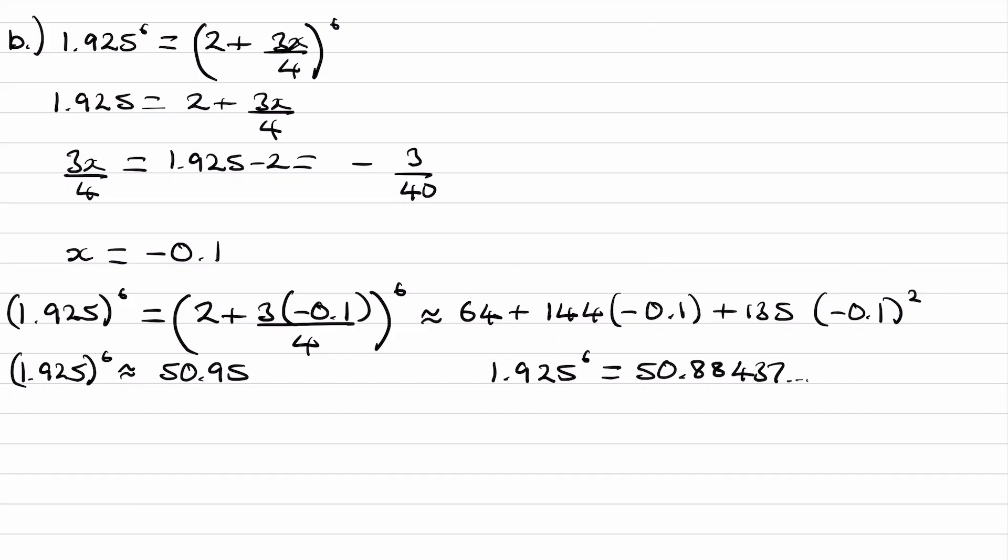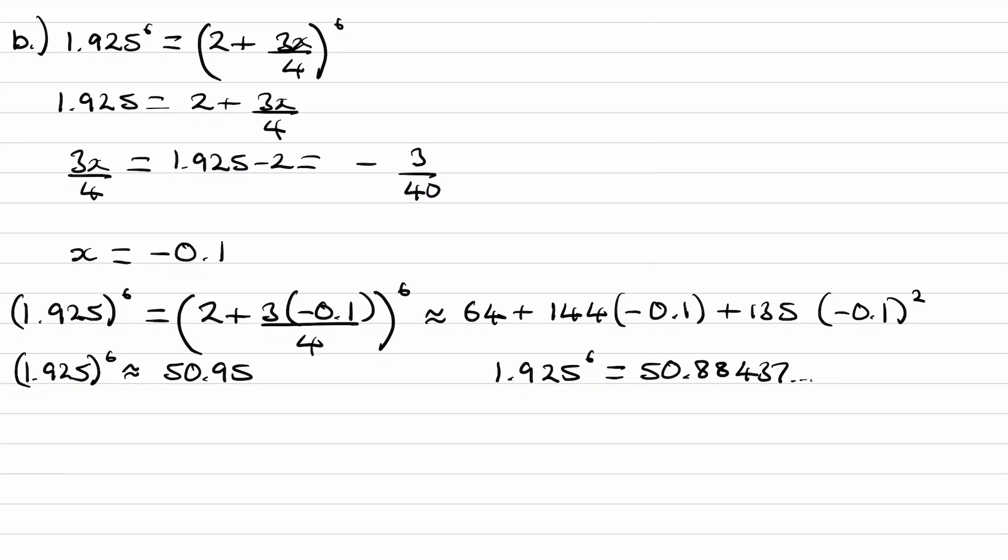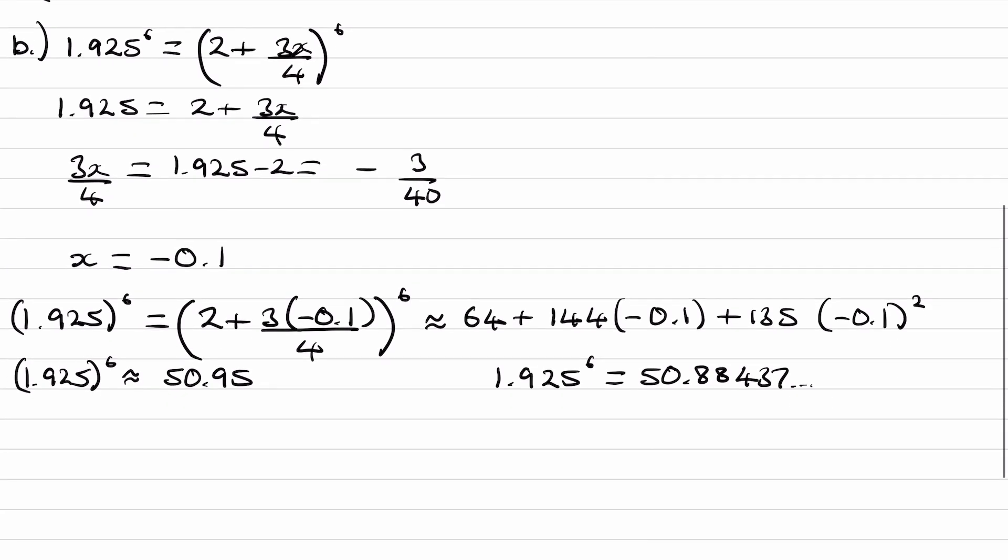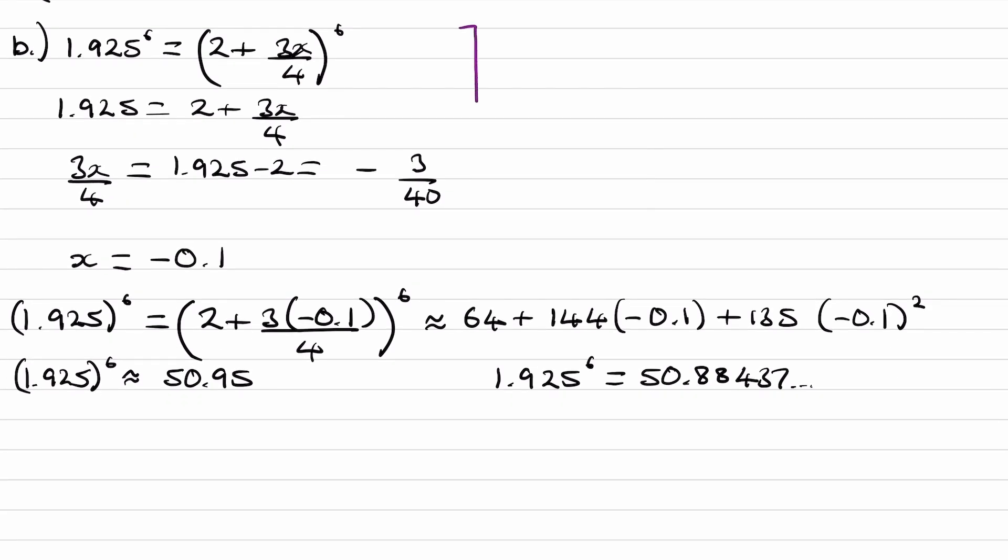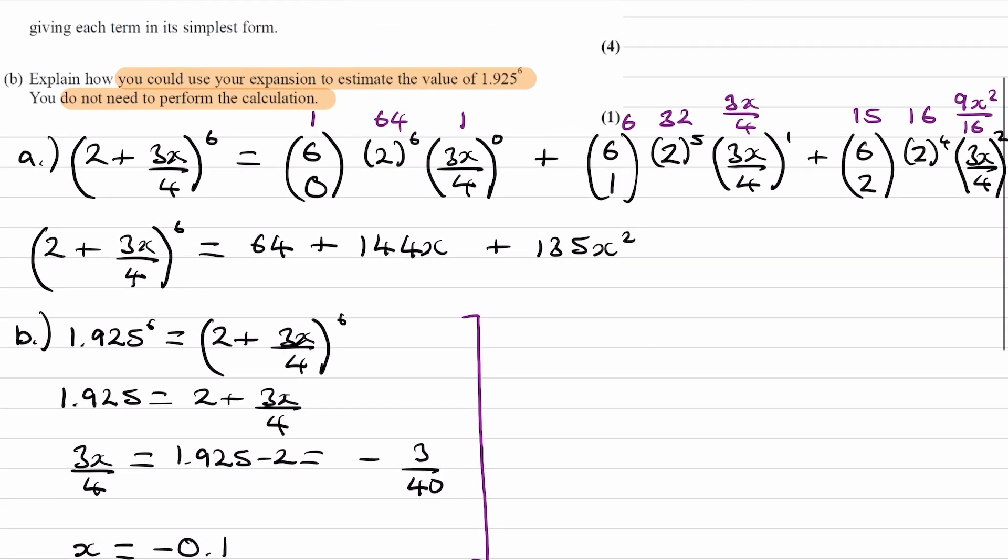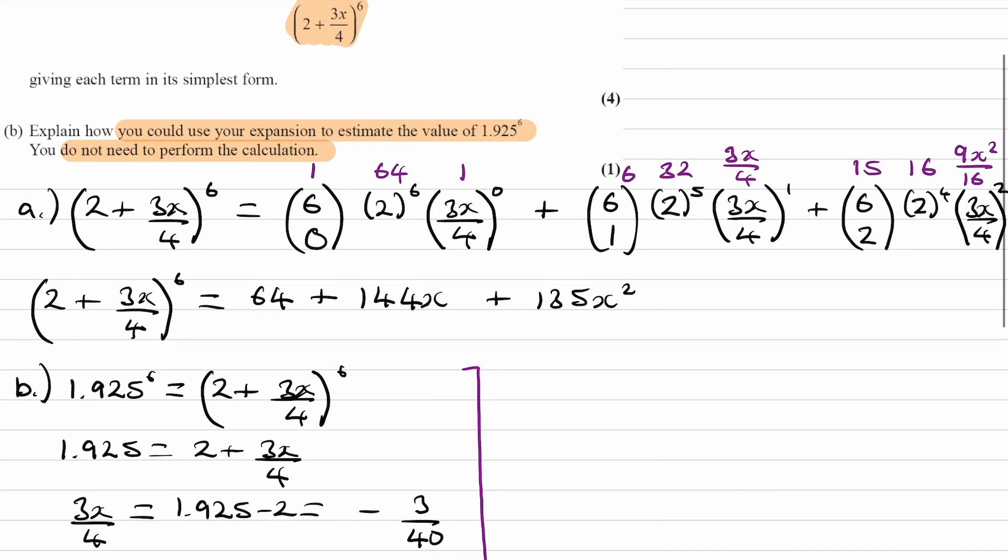So what would we actually write for our final answer? Although it says in the question you do not need to perform the calculation, we actually did want to work out what x was. Our first part of our working would be this bit here, working out what x is. We probably don't need to do it in as many lines, maybe we can do it in like two lines or something. And then once you've worked out your value of x, you then say substitute minus 0.1 into our expansion that we worked out in part A, which is what we have here. And that should be enough for that one mark.